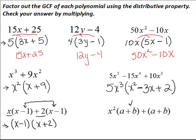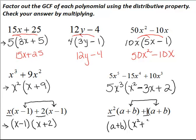Looking at the next example, it's quite similar. Both terms are being multiplied by a plus b, so we factor out a plus b. What's left beside it is x squared and, remember, there's always that invisible 1 there. So factoring out a plus b, we're left with a plus b times the quantity x squared plus 1. So we've factored each of these using the greatest common factor.